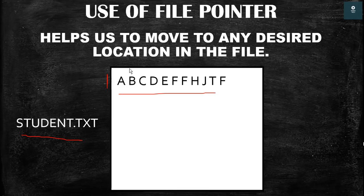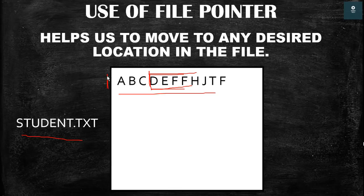Suppose we want to read data from a certain location — for example, from 'd' onwards. We can use functions to change the location of the get pointer to that position, and then easily read the data from there. In this way we can use file pointers to read or write data.